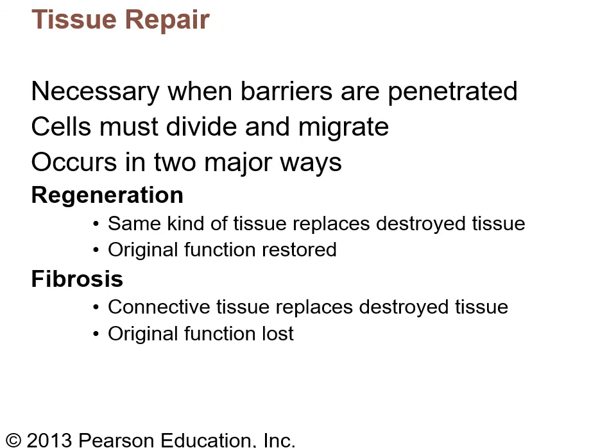Tissue repair: when barriers are penetrated, cells must divide and repair to recover function. It occurs in two major ways. Regeneration means the same kind of tissue replaces what was destroyed and original function is completely restored. Fibrosis means connective tissue replaces destroyed tissue and original function is lost — this generally refers to scarring. A severe burn with scarring results in fibrous connective tissue replacing original skin, causing loss of flexibility and sometimes limiting movement in a joint.